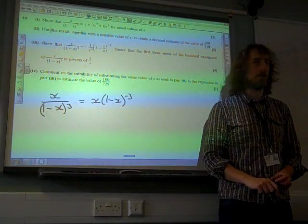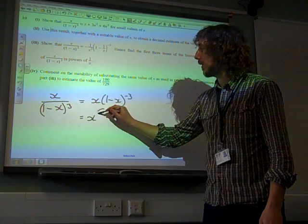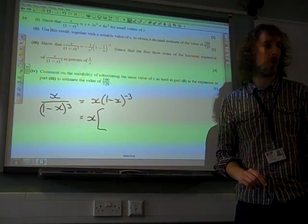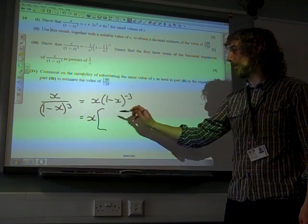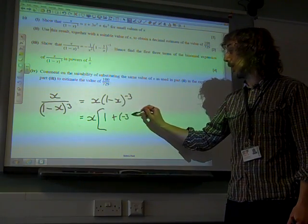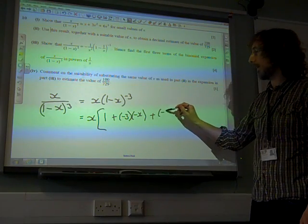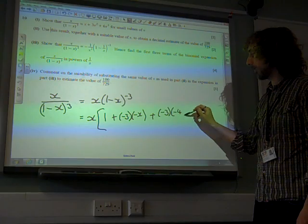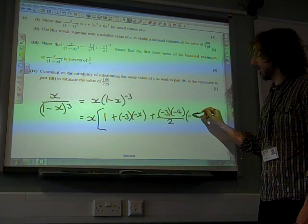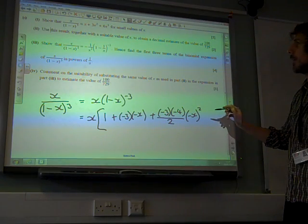So we need to do the binomial expansion of 1 minus x to the minus 3, which is x times... what would that be? That's 1 plus minus x. And the power of minus 3 is 1 plus n times x, plus n times n minus 1, all over 2, times the x bin squared.